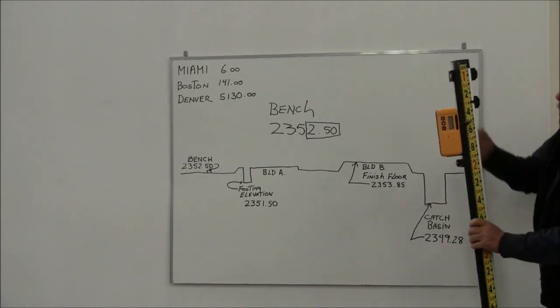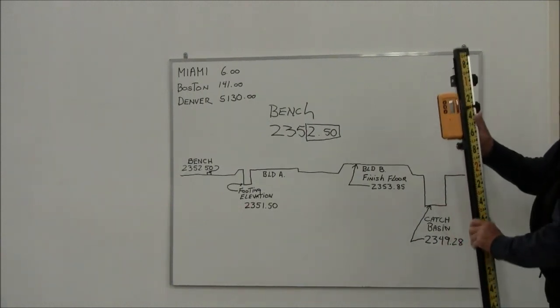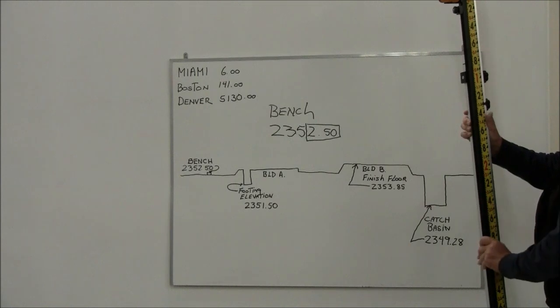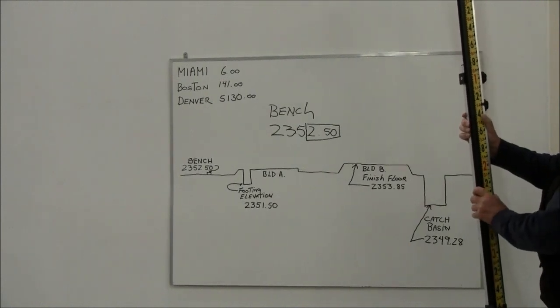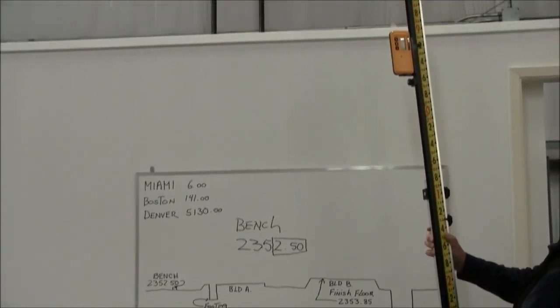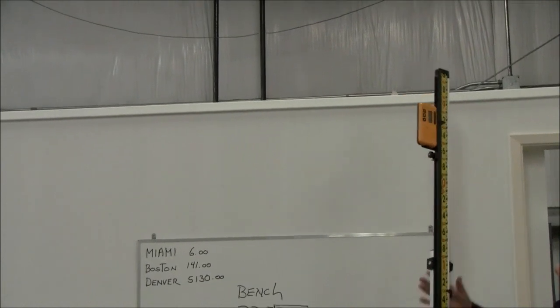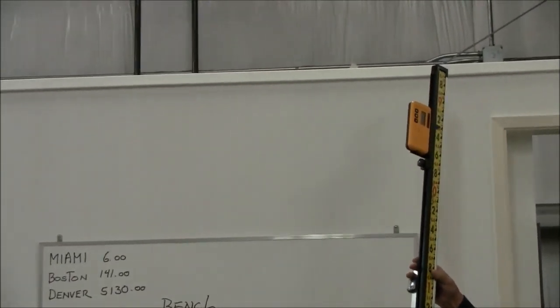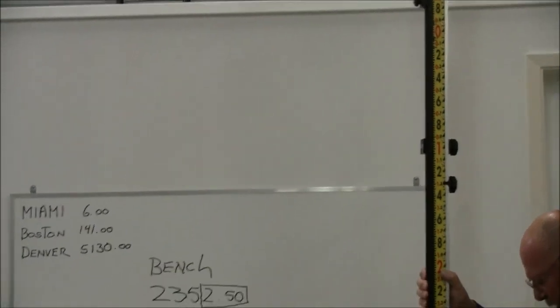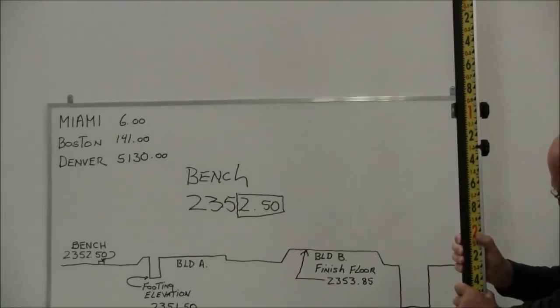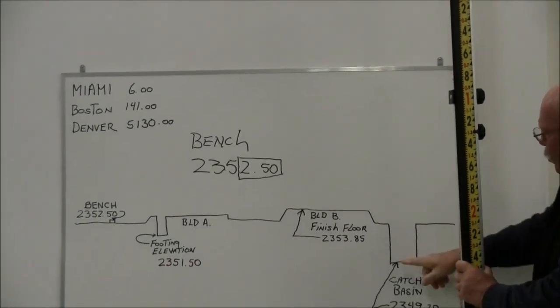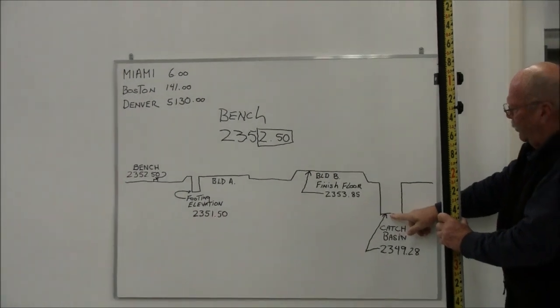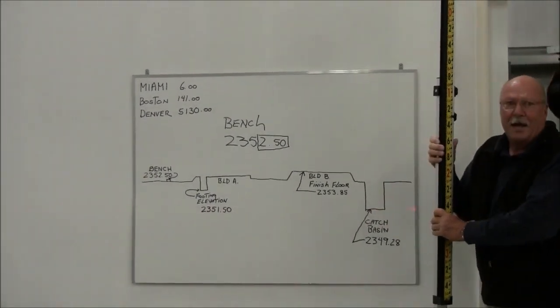Same thing with a catch basin. 2349.28. What I would do is run the rod to 9.28. There's 9.25, 28 right there. So as I dig down, when I pick up the steady tone and the bottom of my rod is at that point, I'm at that elevation.